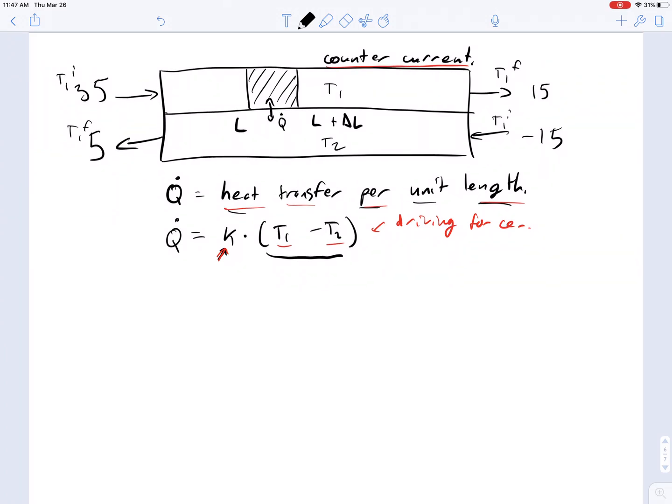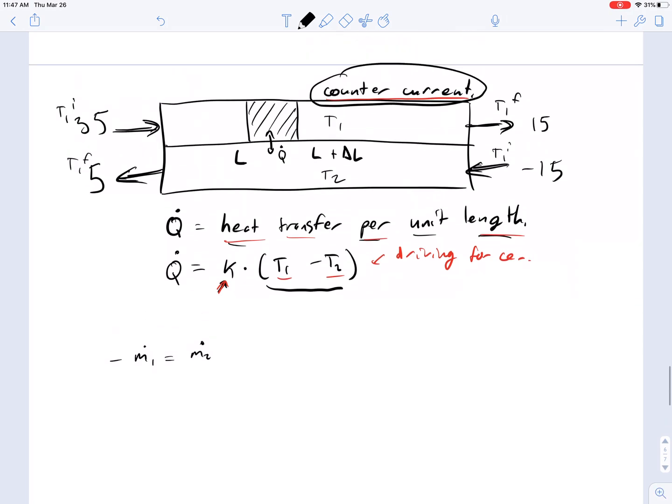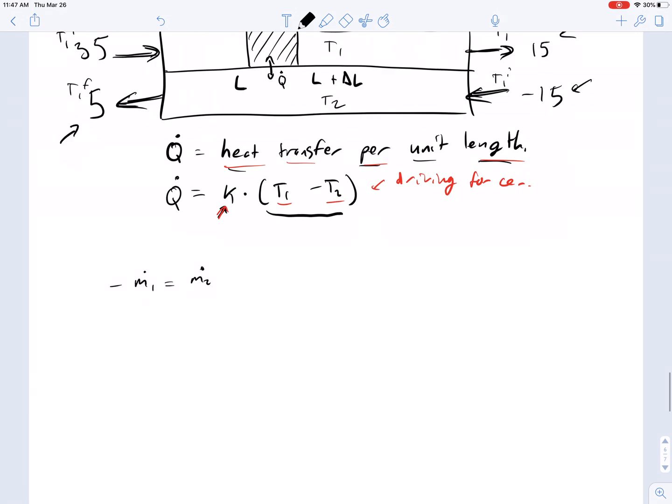Now we're going to consider the counter-current example. We're going to look at the counter-current heat exchanger. The only difference is that now we have to consider the mass flow rates in the two streams being in opposite directions, because one is flowing to the right and one stream is flowing to the left. We have to adjust the temperatures at the entrance and exit of each of the streams to account for this and take a look at how this impacts our overall balance equations.